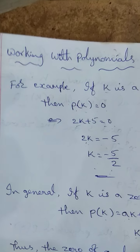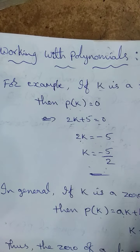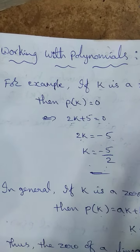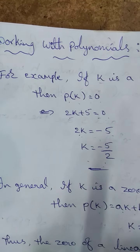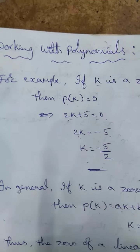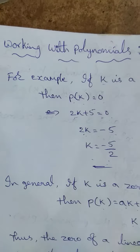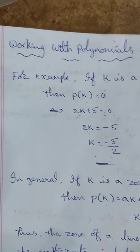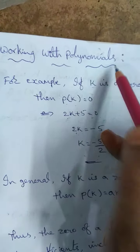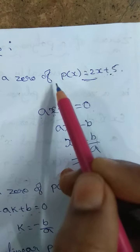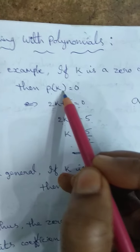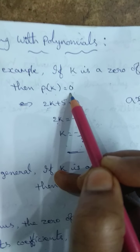Hi children. In the previous video we covered polynomials, zeros of polynomials, and types of polynomials. Now we are working with polynomials. For example, if k is a zero of p(x) = 2x + 5, then p(k) is equal to 0.